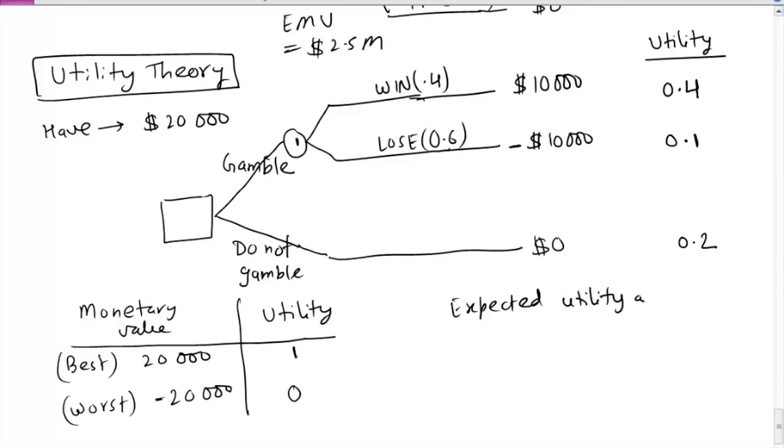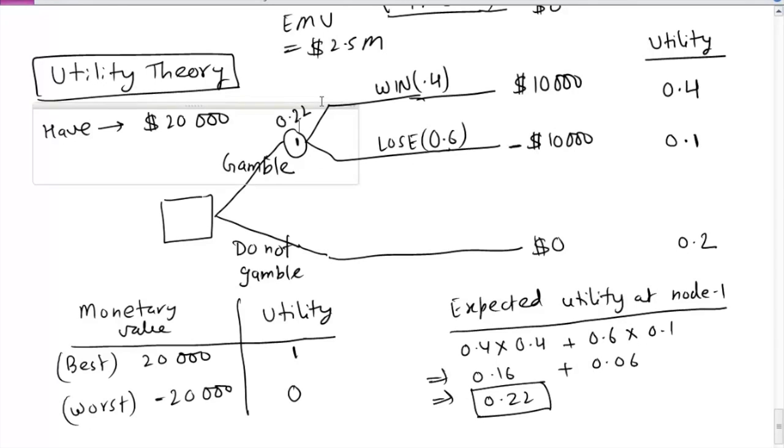So expected utility at node 1 we calculate again using the weighted average as we have done in the past. So this is 0.4 times 0.4 which is the probability of winning. 0.6 is the probability of losing. 0.1 is the utility. So you get 0.16 plus 0.06. So your expected utility at node 1 is 0.22. So this is 0.22 and the value you have for do not gamble 0.2. So obviously 0.22 is more than 0.2. It will make sense based on your personality or the personality of the decision maker to go for gambling. So this is the solution based on which decision is made.